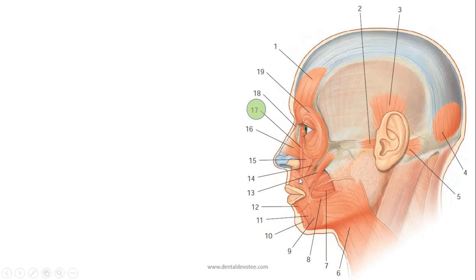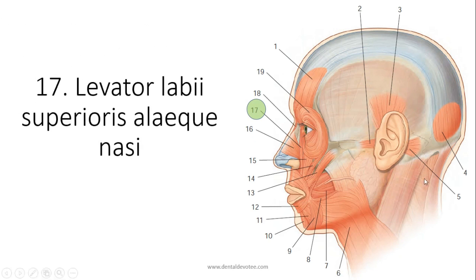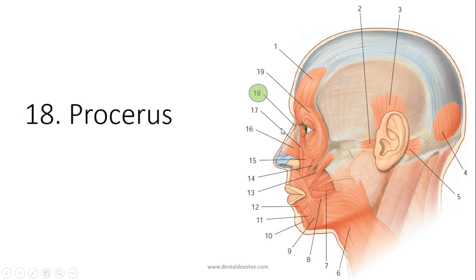This thin muscle originates from the upper lip and is inserted into the nasal region, so its name is levator labii superioris alaeque nasi. It is inserted into the corner, medial corner of the eye.